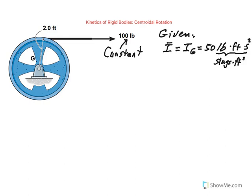So the mass moment of inertia of this flywheel—remember the mass moment of inertia is a measure of resistance of the rigid body to rotational acceleration. So what do we want to find here? We have this flywheel rotating due to this constant force, and we want to find the number of revolutions this flywheel will go through in three seconds.